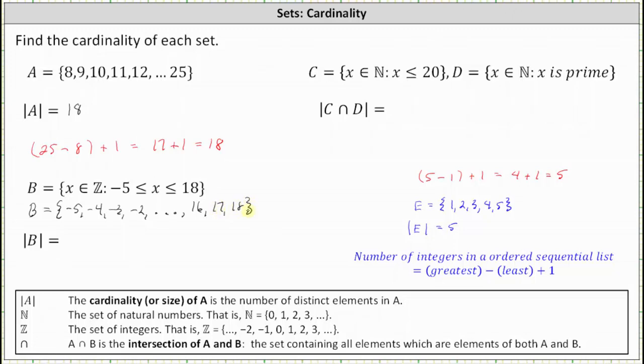So again, the cardinality is the number of elements in set B. Well, the number of elements from 1 to 18 is 18. The number of elements from negative 5 to 0 is 6. 18 plus 6 is 24. The cardinality of set B is 24.